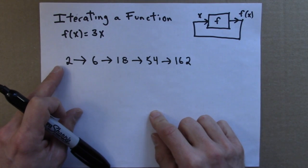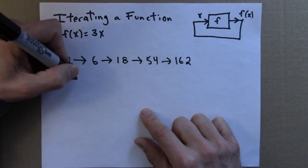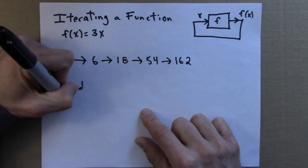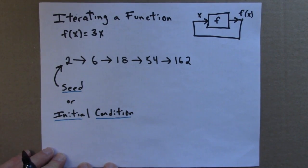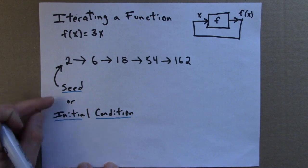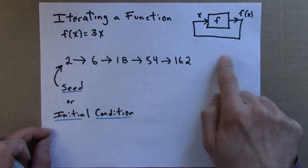The starting number, the number we start with, is called the seed or initial condition. So in this example, the number 2 we would say is the seed or the initial condition. The seed is just the starting value, the number we put in to get this loop going.